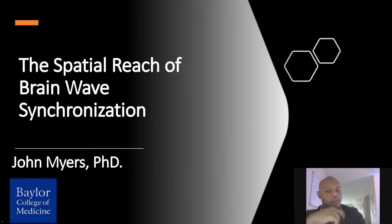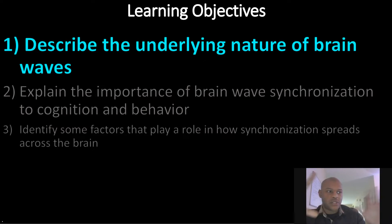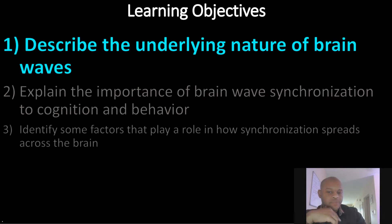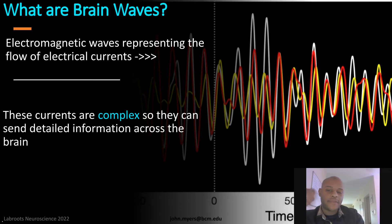The first thing we want to talk about is understanding the underlying nature of brainwaves. We've all heard of these things, these special spectral changes that happen inside the brain, but what are they? Brainwaves are electromagnetic waves that represent the flow of electrical currents through the brain, and these currents are very complex, so they can send detailed information across neural tissue.